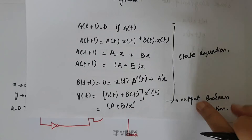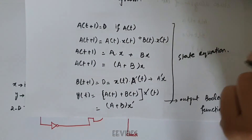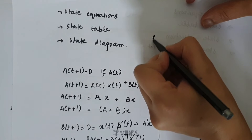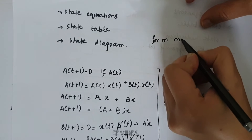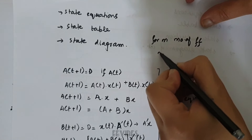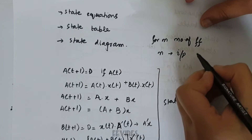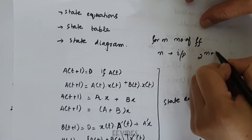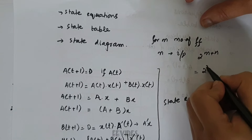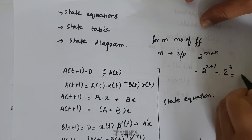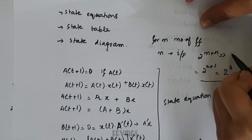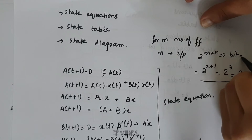Once we are done determining the state equations, the next step is to construct the state table. For m number of flip-flops and n number of inputs, the number of rows in the state table equals 2 raised to the power (m + n). Here, 2^(2+1) = 2^3 = 8 rows. We will write the binary combinations for 8 rows using 3-bit binary combinations.